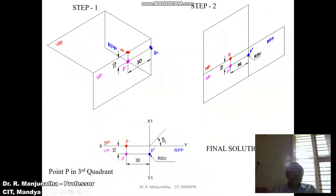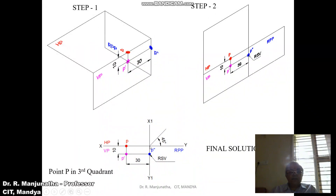Draw a 45-degree line adjacent to HP — since HP is above the XY line, the 45-degree line should be above the XY line. Using a protractor, measure 45 degrees from the origin and draw a thin line. Draw a horizontal projector from p to the XY line (origin), then draw a vertical projector downward. From P dash draw a horizontal projector — both intersect at P double dash. Mark the points as p, P dash, and P double dash.